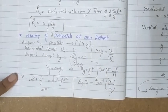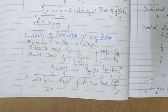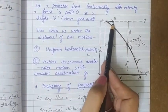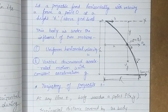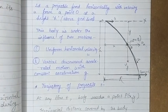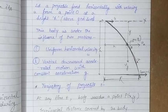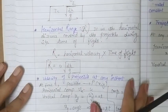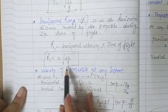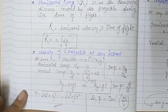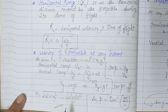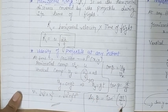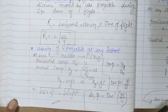To summarize this projectile with horizontal projection: the initial velocity was entirely horizontal with no vertical component. The trajectory is parabolic. The time of flight is T = √(2h/g). The horizontal range is R = u√(2h/g). The velocity magnitude at any instant is √(u² + g²t²) and its direction with horizontal is tan⁻¹(gt/u).